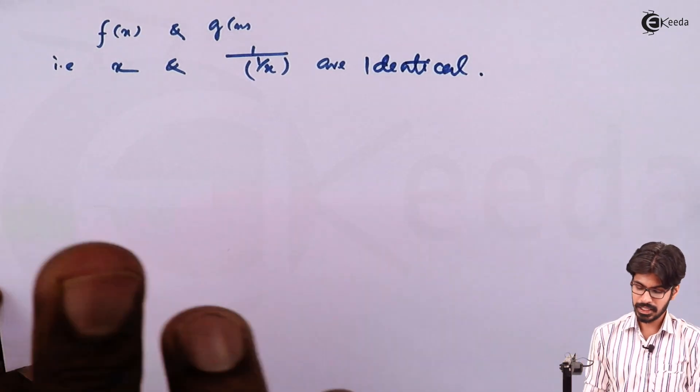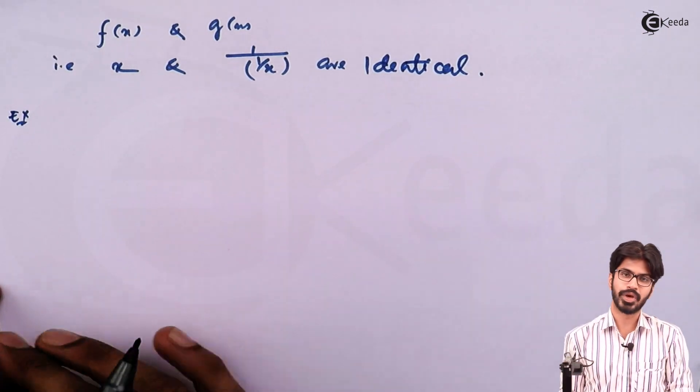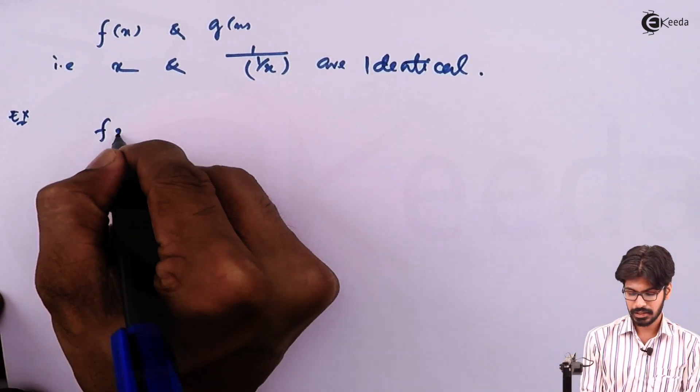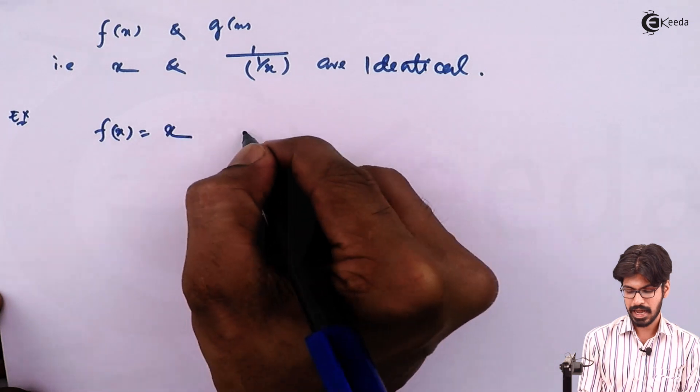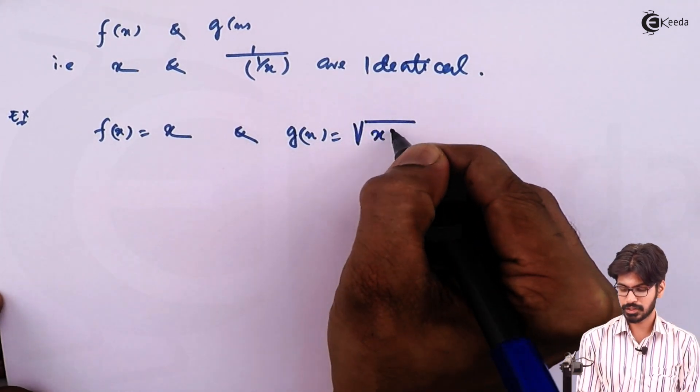Let us consider another example. We all know that square root of x square is x. So let us consider f(x) as x and g(x) as square root of x square.